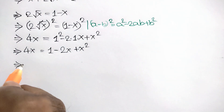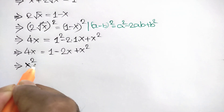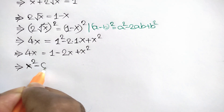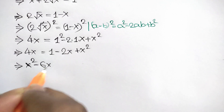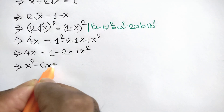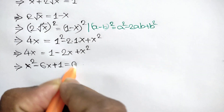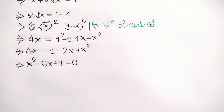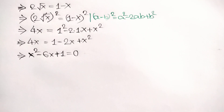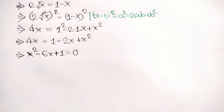So 4x is equal to 1 minus 2x plus x squared. Now taking this 4x to the right side and changing sides, we will get x squared minus 6x plus 1 is equal to 0. Now here we can use the quadratic formula.